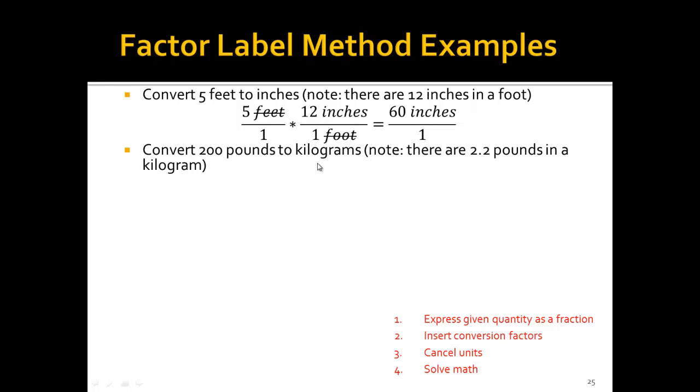Alright, so let's try 200 pounds to kilograms. There's 2.2 pounds in one kilogram. Same type of idea. 200 pounds, except now we have one kilogram on top and then 2.2 pounds on the bottom. Again, we cross out the units. This is what I'm going to be looking for, crossing out units. Always do that. And then we're left with kilograms, so that's what's on the right-hand side.